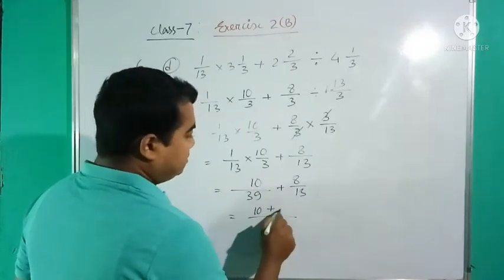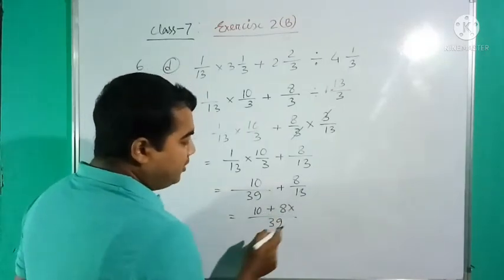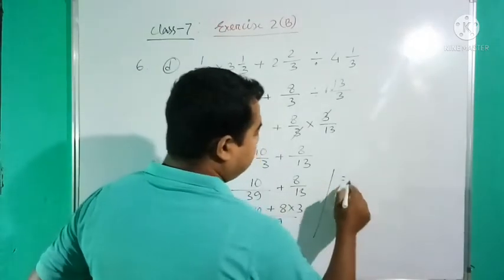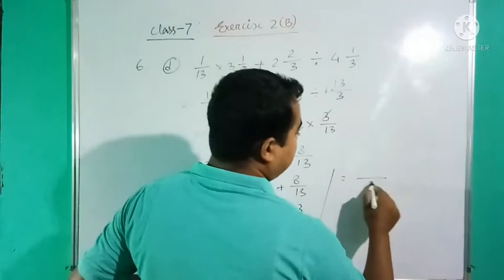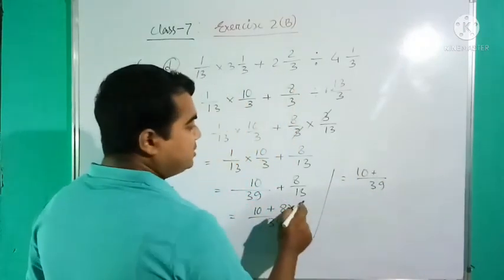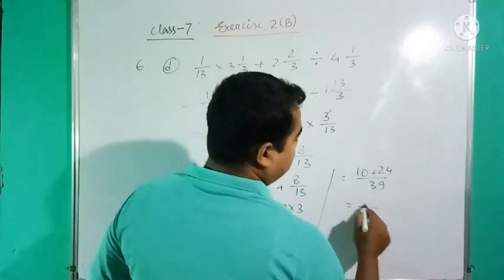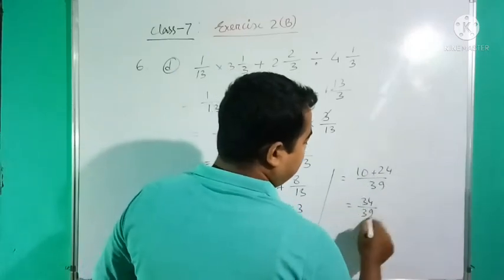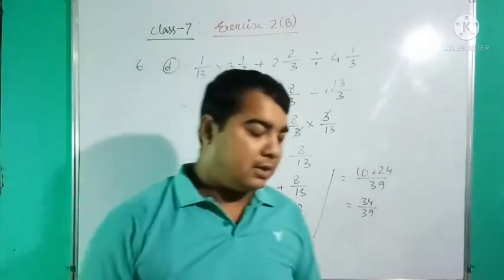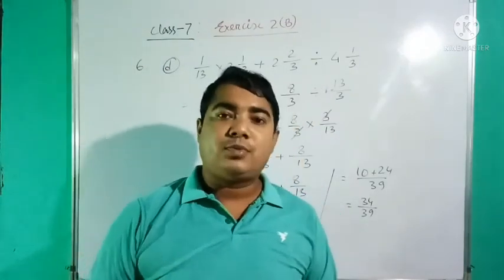13 and 13 are the same, so LCM is 39. So 10 plus, it is 24, then 34/39. We got the answer 34/39.